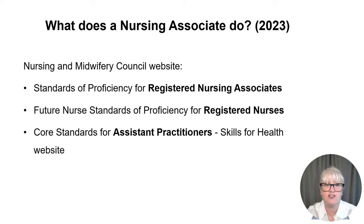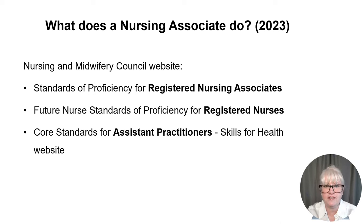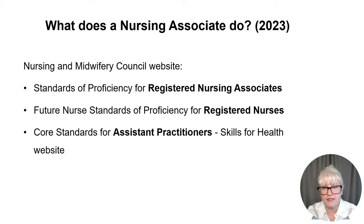There are different proficiencies for a registered nursing associate and a registered nurse, and it's great to compare those proficiencies if you're unsure which path to take. The proficiencies for a registered nursing associate are presented across six platforms, whereas registered nurse proficiencies are across seven platforms. The proficiencies include areas such as promoting health and preventing illness through health education, providing and monitoring care, and contributing to teams.